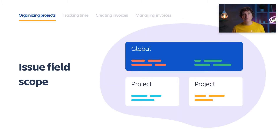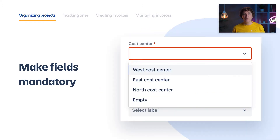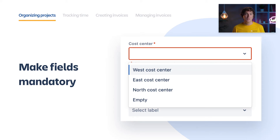Another important thing to keep in mind is the field scope. Some fields are visible inside specific Jira projects only, and some could be global for your entire site. I will show more examples soon. If your invoicing relies on some issue field, don't forget to make it mandatory. You don't want to lose money when someone forgets to set the task cost center. If you need to make a field not mandatory, make it mandatory anyway, and just create a separate option with a name like 'empty' or 'not set,' so people will not miss it.